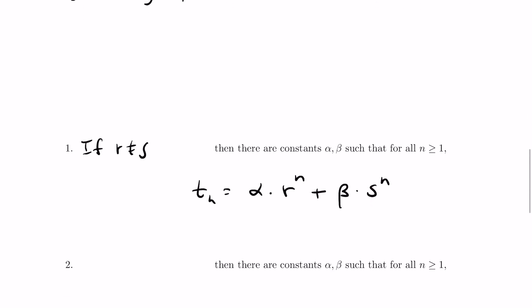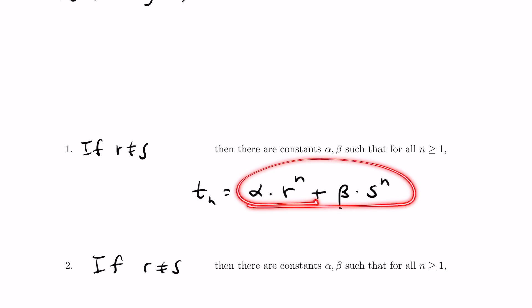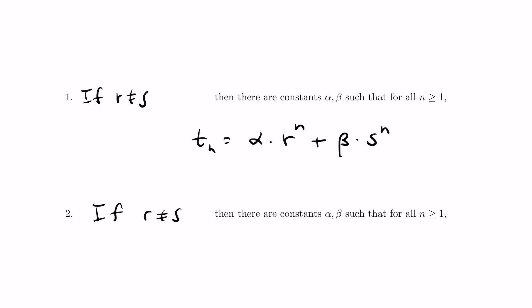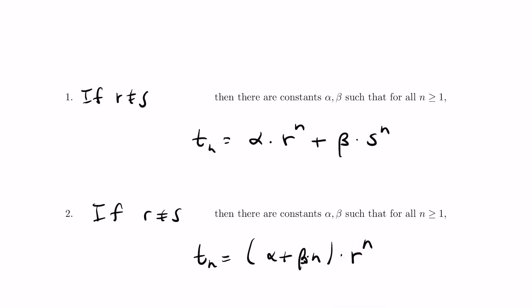Now if it's the case that r and s are the same, then it looks like this would collapse into one term, but it turns out it looks slightly different. You'll have that t sub n is alpha plus beta times n, for some constants alpha and beta, times r to the n. Notice here r and s are the same, so we could replace this by s instead of r.